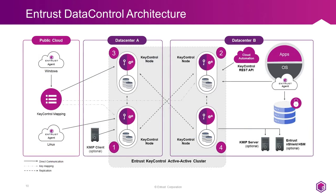Let me briefly cover the deployment architecture for Key Control and Data Control. This slide depicts a typical primary and secondary data center with the option of VMs running in a public cloud. Key Control is sold as a four-node cluster minimum and maxes out at eight nodes, though four nodes is sufficient for most customers. You would deploy two nodes in the primary data center and two in a secondary data center, connect the cluster to vCenter, and begin encrypting VMs. If you're also running VMs in a public cloud, you would install the Data Control policy agent on those VMs, register them with Key Control, and enable encryption. Consult the online documentation to ensure the policy agent can communicate with the Key Control cluster from the public cloud.